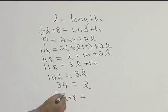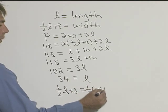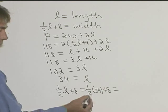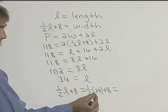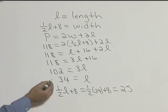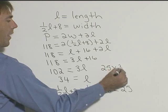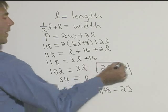Let's actually plug it in. We know L is 34, so this will be one half times 34 plus 8. Well, half of 34 is 17, plus 8 will be 25. So our rectangle has a width of 25 and a length of 34. It's a 25 by 34 rectangle.